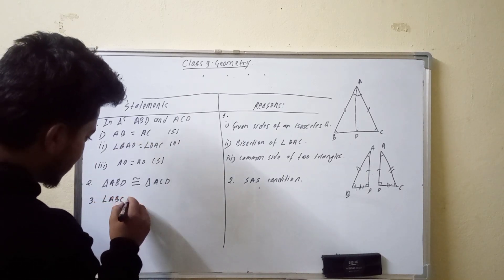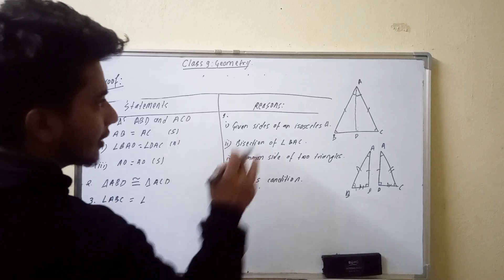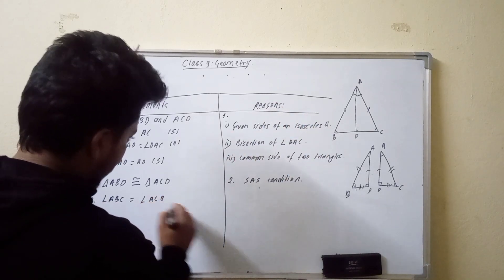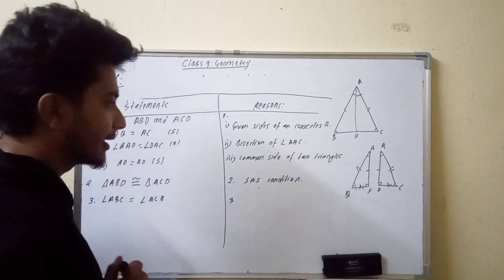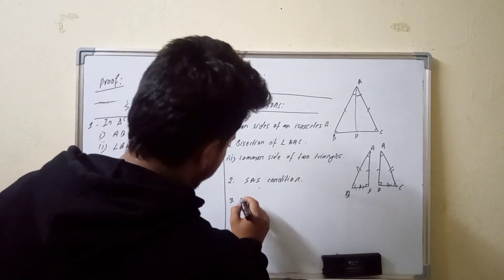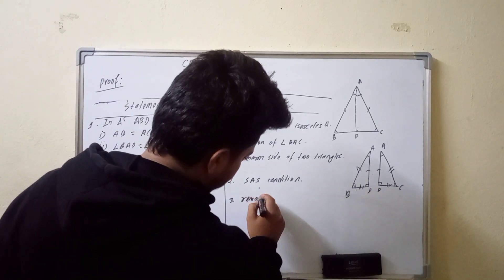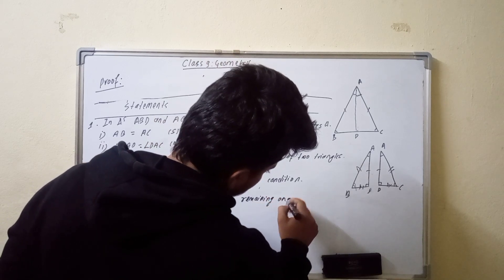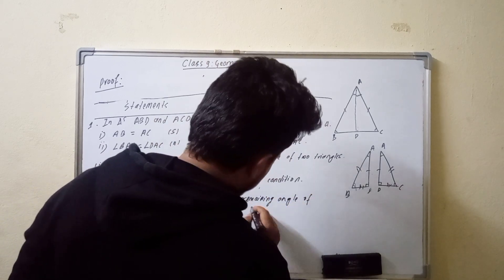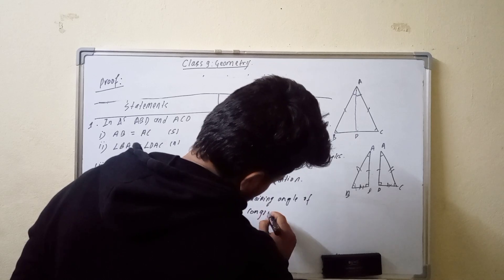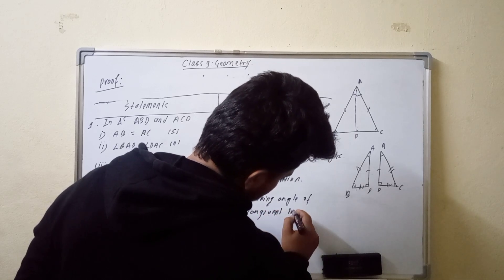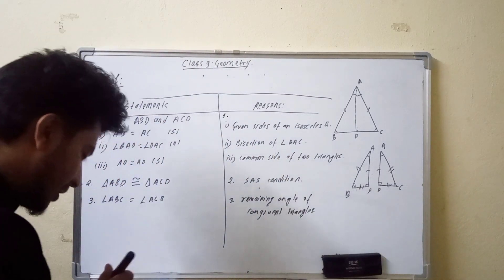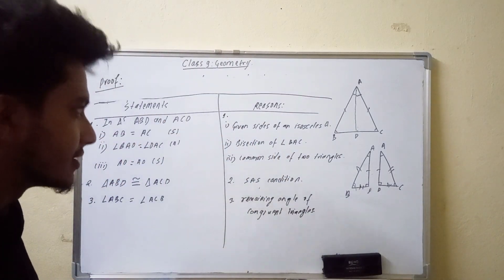We will write angle ABC equals angle ACD. Here we will write the angle and the reasoning. We will write: remaining angle of congruent triangles. Because the remaining angle of congruent triangles is equal.